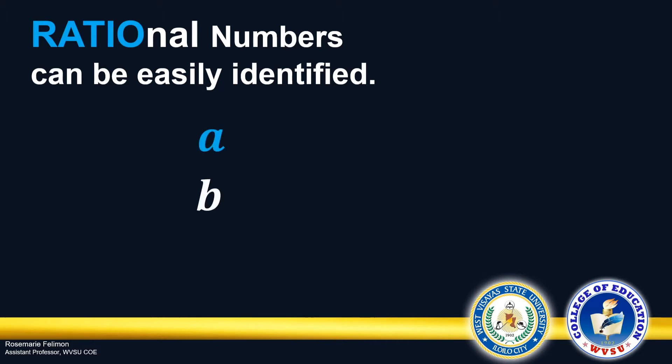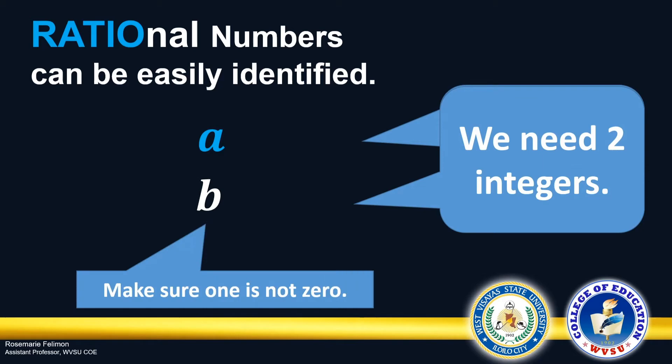All we have to do is to identify two integers, make sure that one is not zero, and get the ratio of these two integers, or the quotient. And so, we get a rational number out of this process.